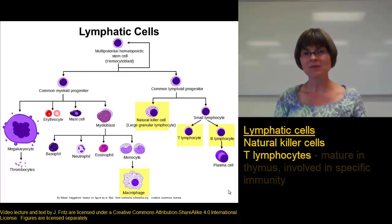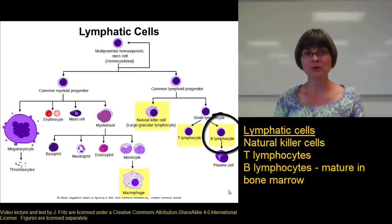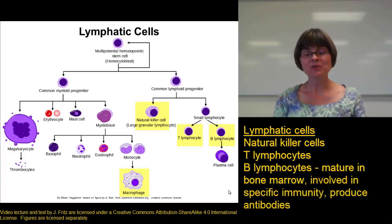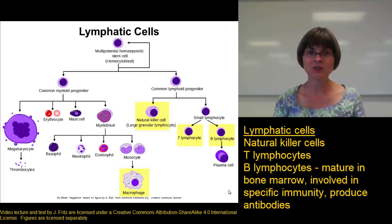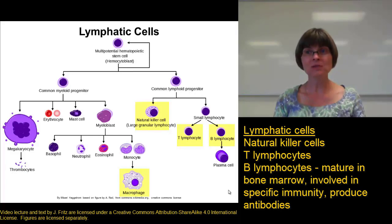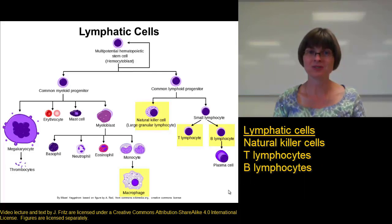The B lymphocytes are called B lymphocytes because they mature in the bone marrow before they go out into the lymphatic system. These are responsible for producing the antibodies that circulate in the bloodstream to attach to and destroy antigens that don't belong in the body. These are also really important for specific defense in immunity, and we'll talk about them more when we get to the immune system section.